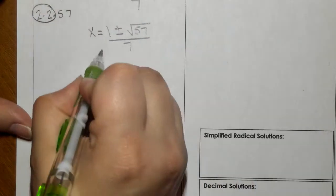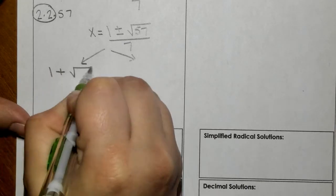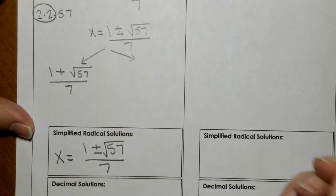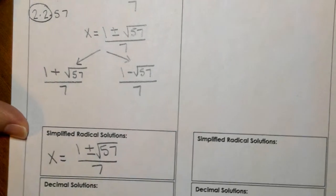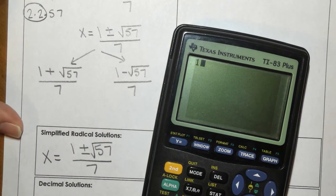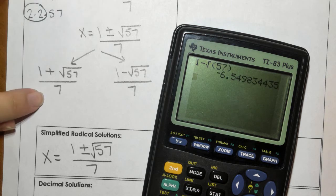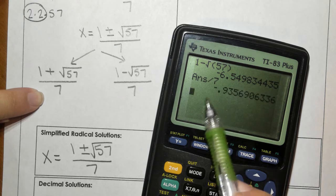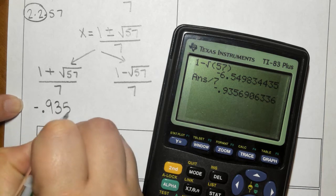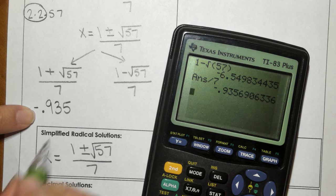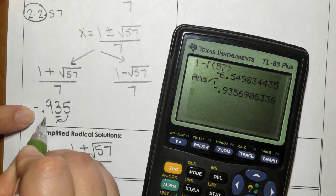But it also says to find the decimal form. So the first one I'm doing is one plus the square root of 57 divided by 7, and one minus the square root of 57 divided by 7. So one minus the square root of 57, and then I divide that by 7. So I get negative 0.935. The 3 is definitely going to round up to be negative 0.94.